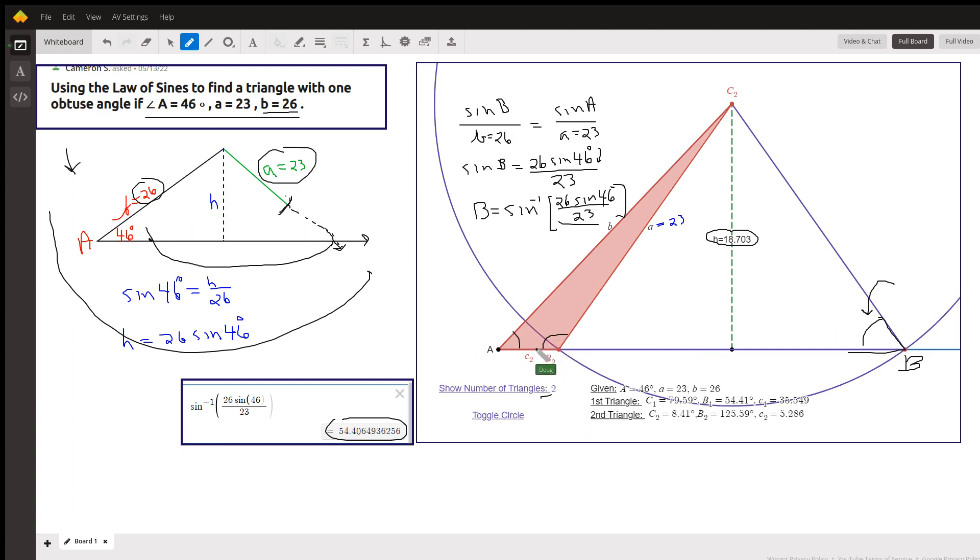For the obtuse angle, we have to subtract this number 54.41 from 180 because 180 minus this 54.41 will also have a sine that's this number. And once you've got B sub 2 which is 125.6 or 126 degrees...